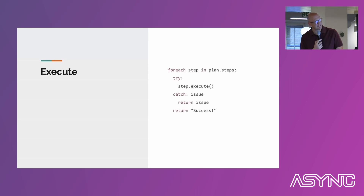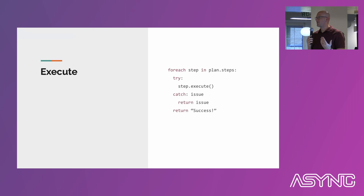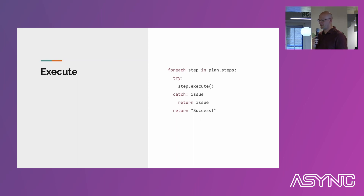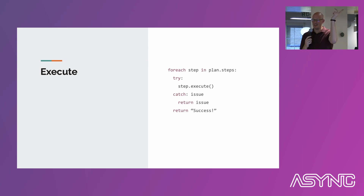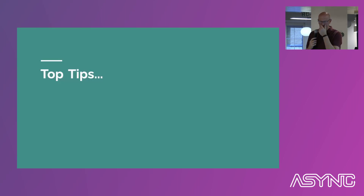There you go — tried and tested, it's even got error handling. Basically, you go through the steps in the plan, and there will be issues. I cheated a little — like writing code, if there is an issue, I return it and someone else can deal with it, which is probably going to be you, just outside the scope of this loop.